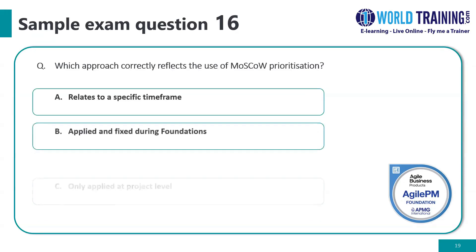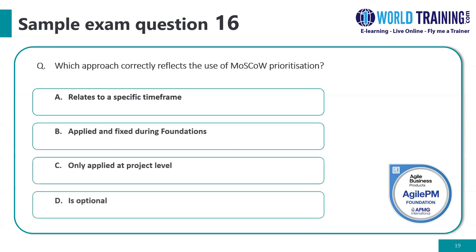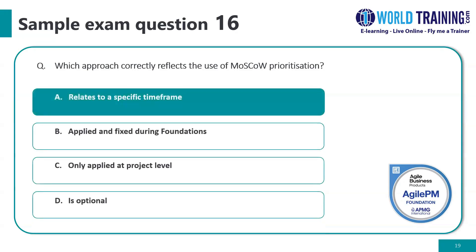Question number sixteen: which approach correctly reflects the use of MoSCoW prioritization? The correct answer relates to a specific time frame — within a time box, what is it that we can do and what is it that we cannot do is an important question.